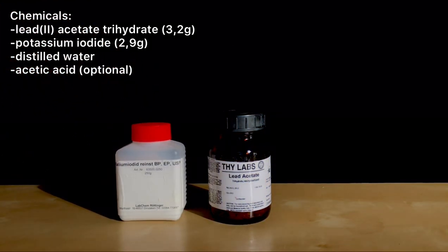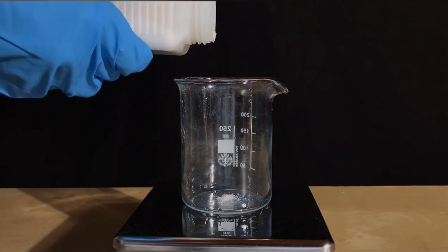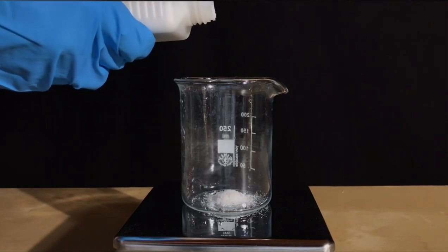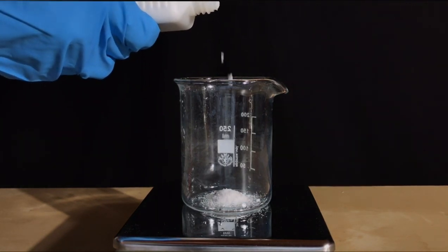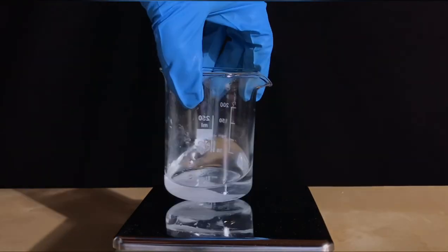3.2 grams of lead(II) acetate trihydrate and 2.9 grams of potassium iodide are needed. We started off by weighing out the potassium iodide. Potassium iodide is this white salt which we then dissolved in approximately 50 milliliters of distilled water.